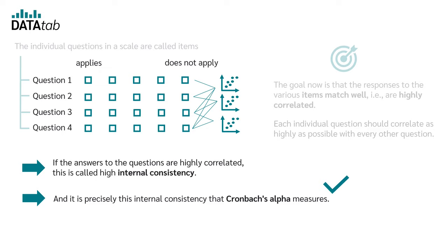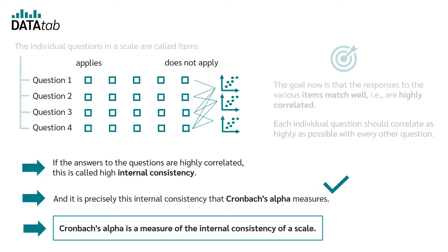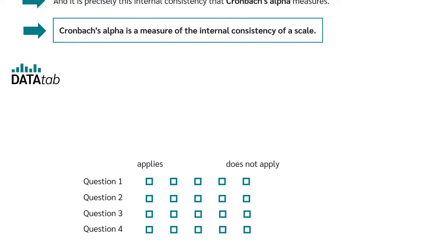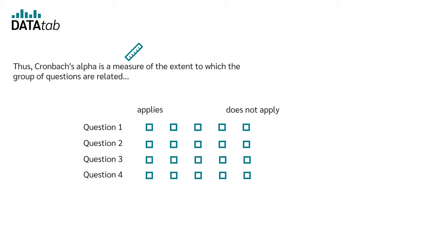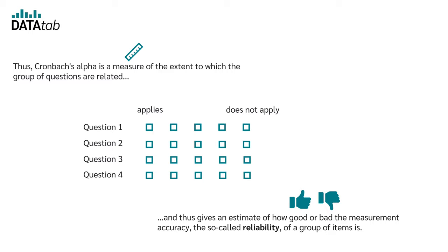And now we have finally arrived at Cronbach's alpha. It is precisely this internal consistency that Cronbach's alpha measures. So we can say that Cronbach's alpha is a measure of the internal consistency of a scale. Thus, Cronbach's alpha is a measure of the extent to which the group of questions are related to each other, and it gives us an estimate of how good or bad the measurement accuracy, the so-called reliability of a group of items is.